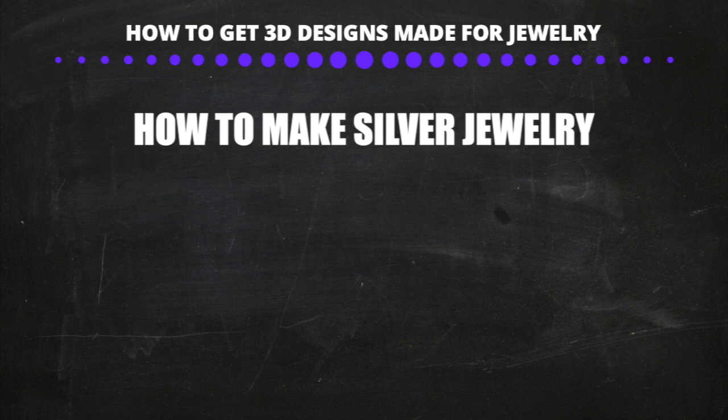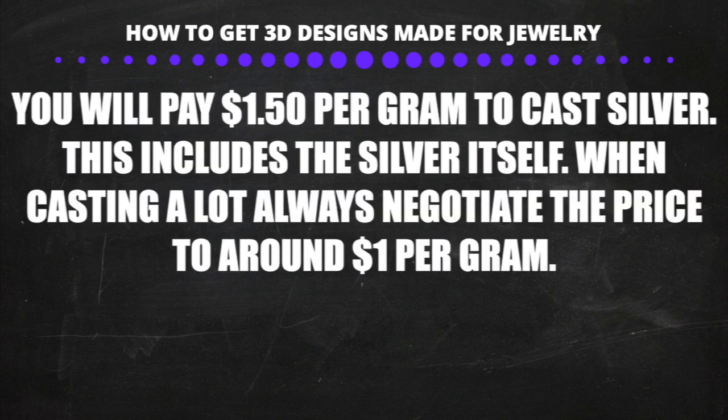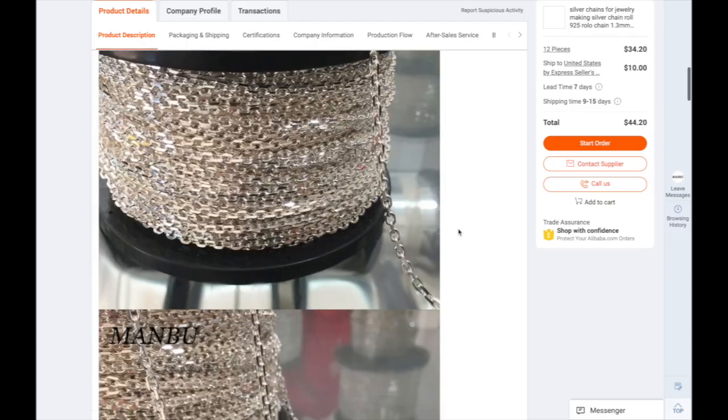For making silver jewelry, the process is exactly the same as gold jewelry. The only difference is you should pay $1.50 per gram including the silver for casting. If you're making a lot of pieces, negotiate that down to around $1 per gram. You can also get wholesale silver chains manufactured in China — they'll even plate the chains for you, just make sure you get a sample first.